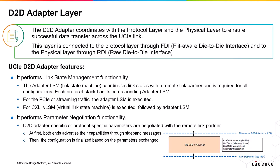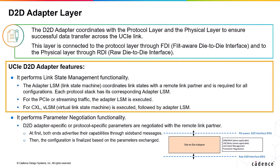Here, information about the D2D adapter layer of UCIE is described. The D2D adapter coordinates with the protocol and physical layers to ensure successful data transfer across the UCIE link. It connects to the protocol layer through the FLIT-aware die-to-die interface and to the physical layer through the raw die-to-die interface. It performs link state management functionality. The adapter link state machine coordinates link states with a remote link partner and is required for all configurations. Each protocol stack has its corresponding adapter link state machine. For PCIe or streaming traffic, the adapter link state machine is executed. For CXL, a virtual link state machine is executed, which is followed by an adapter link state machine.